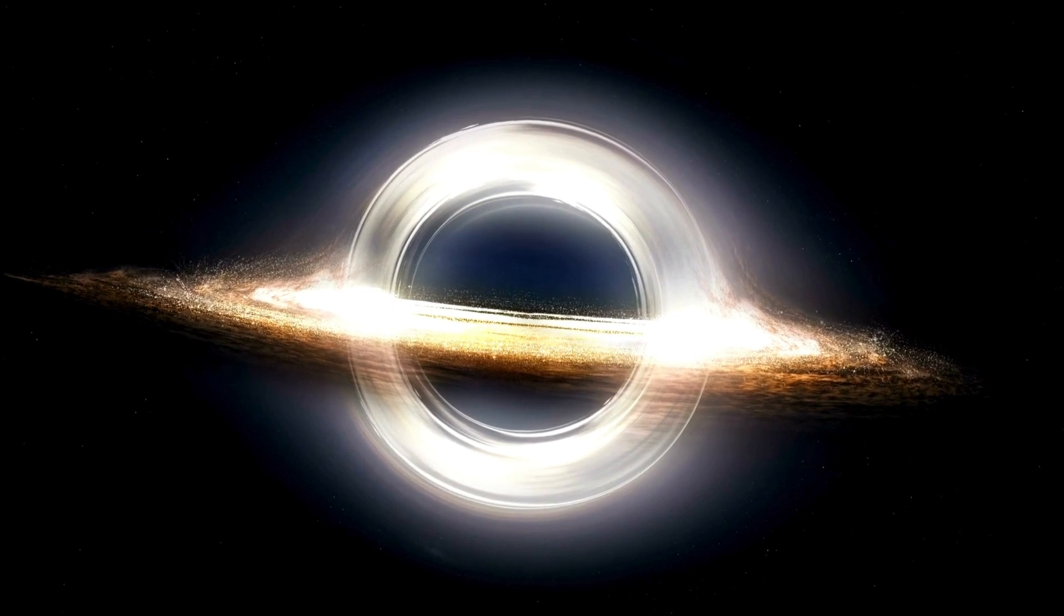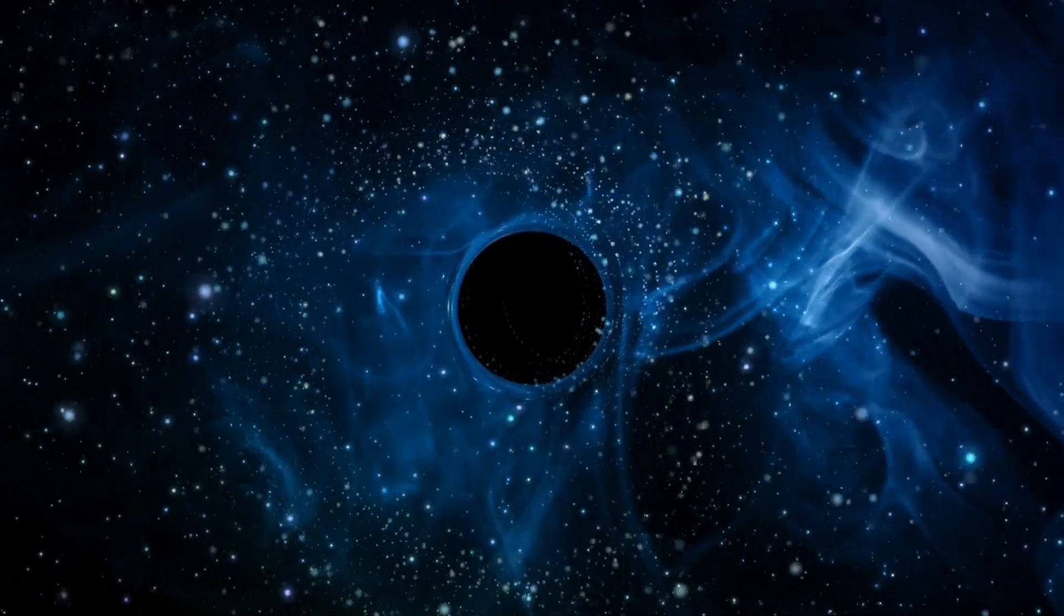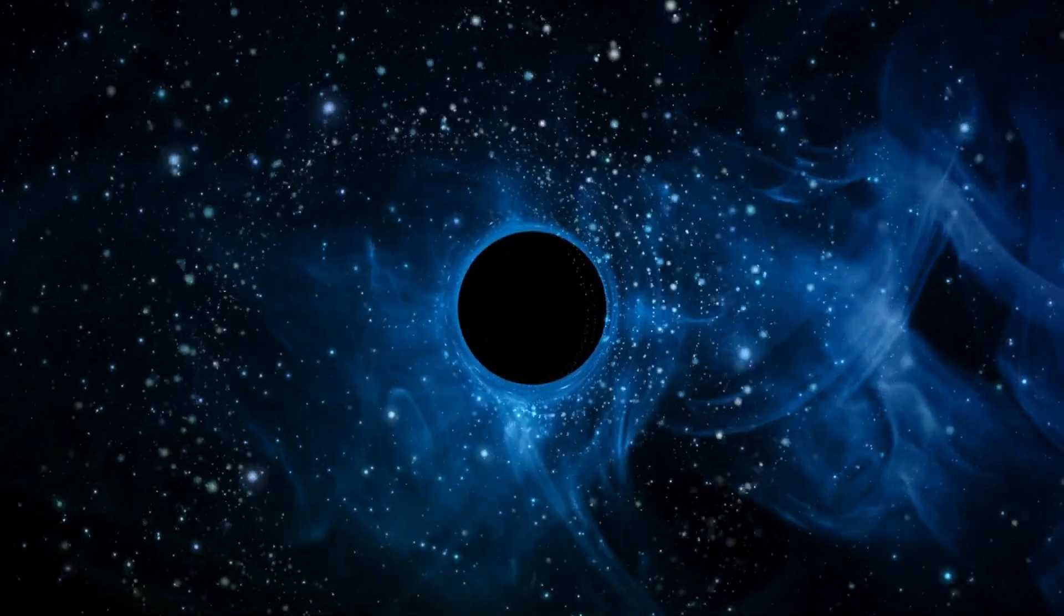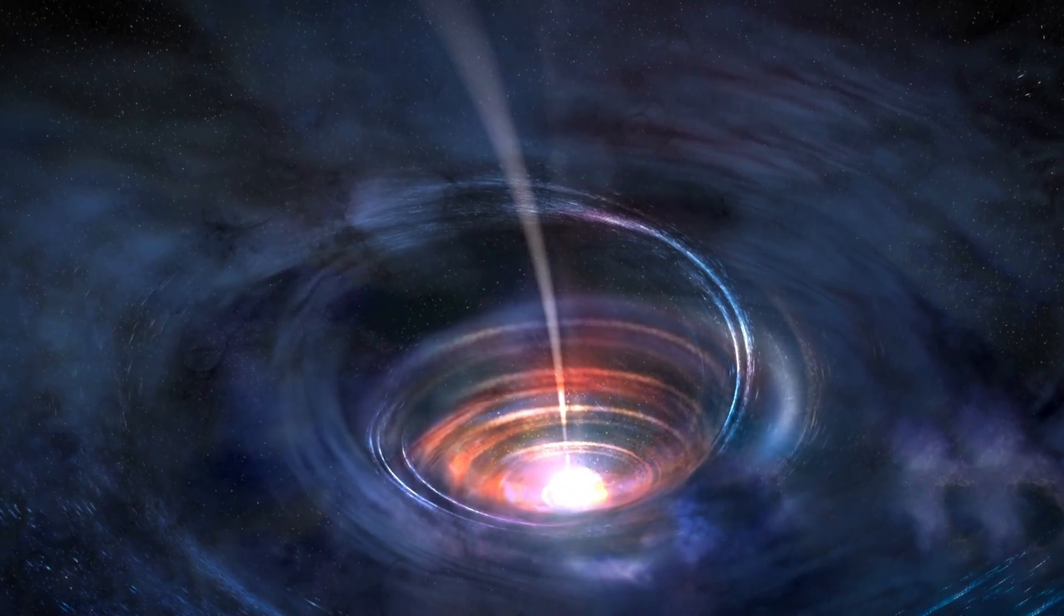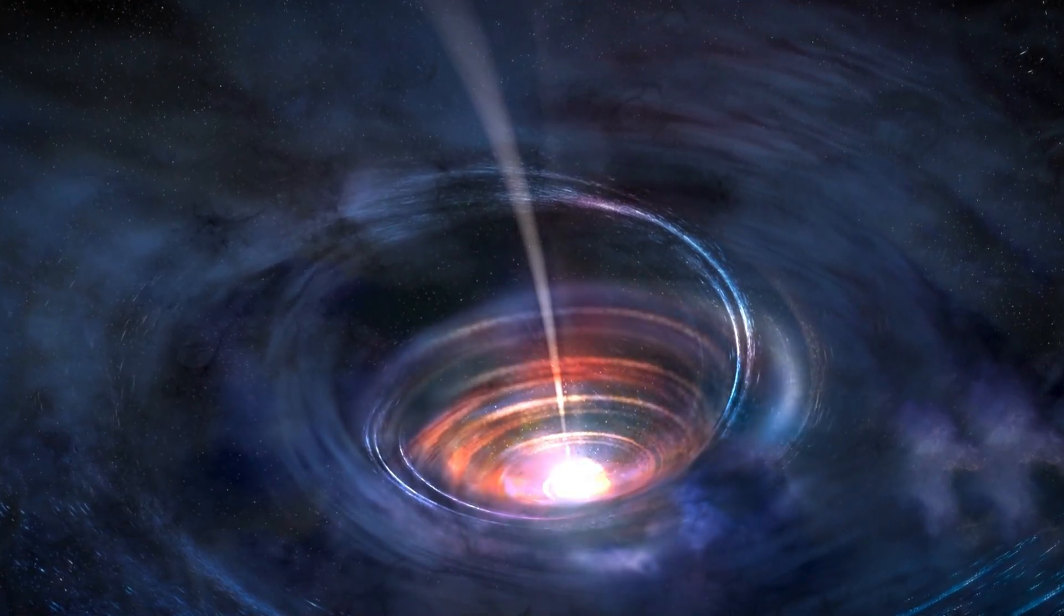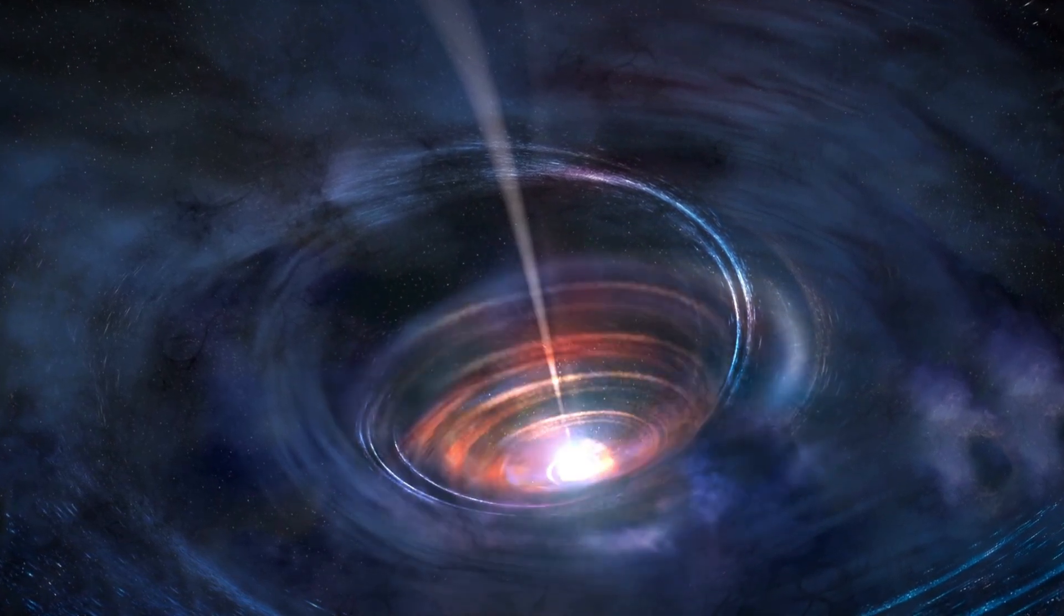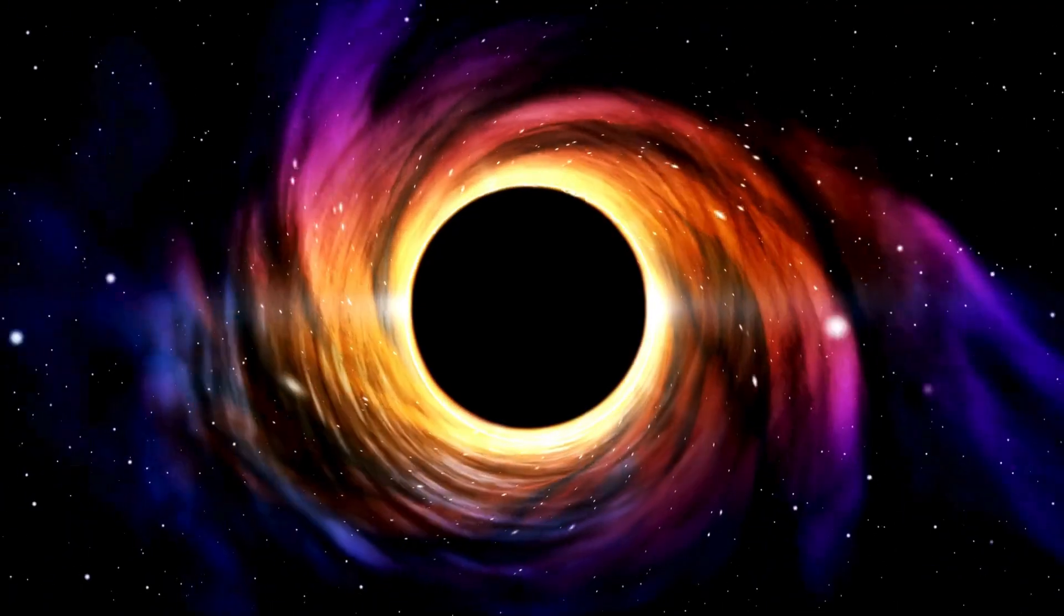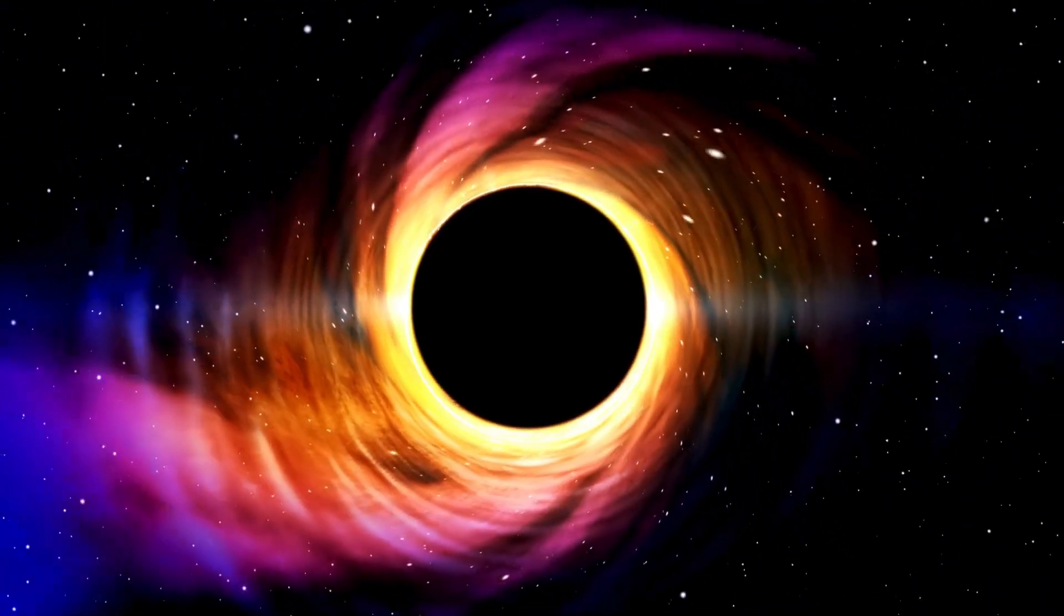But where do black holes come from? Picture this, stars, once magnificent and blazing, meet their ultimate demise in a spectacular explosion called a supernova. From the remnants of these fallen giants, black holes emerge. Most black holes are born from massive stars that have reached their celestial retirement party in a supernova blast. Smaller stars, when they die, transform into something called neutron stars, which are super dense but not dense enough to trap light.